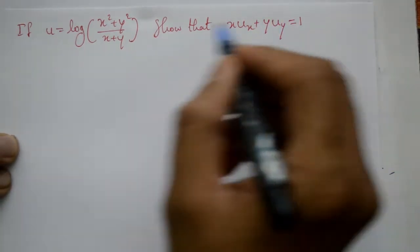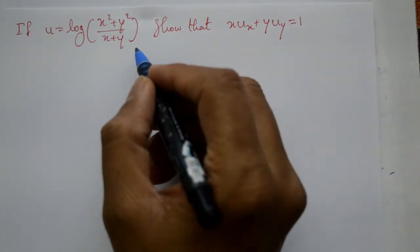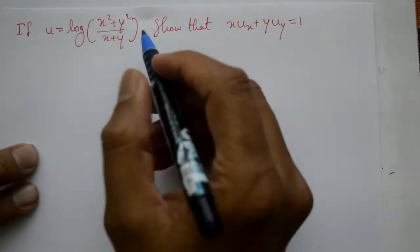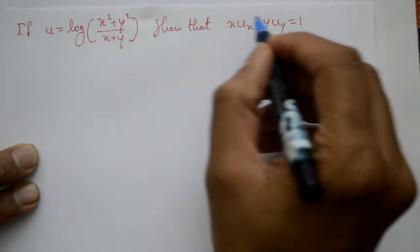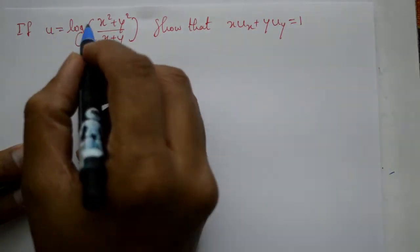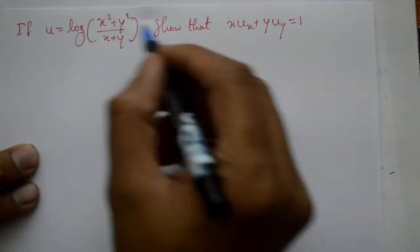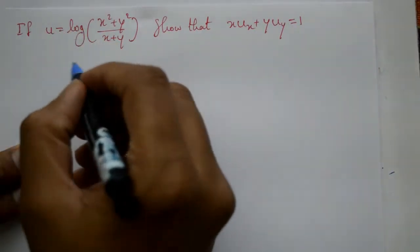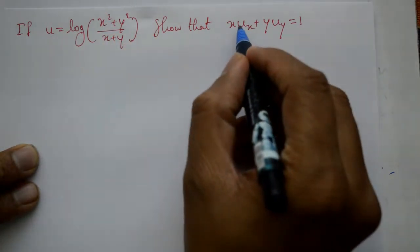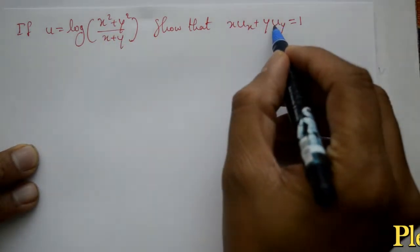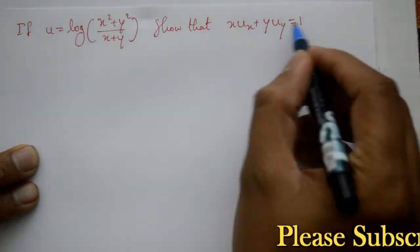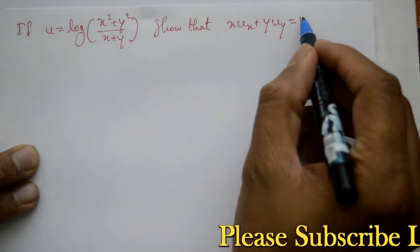This partial differential equation ke problem se, humko dekhana hai. So u ko with respect to x karna hai, baad me is u function ko with respect to y karna hai. First dou u by dou x ko multiply me x karenge, dou u by dou y ko multiply y karenge, add karenge — toh humko 1 dekhana hai.